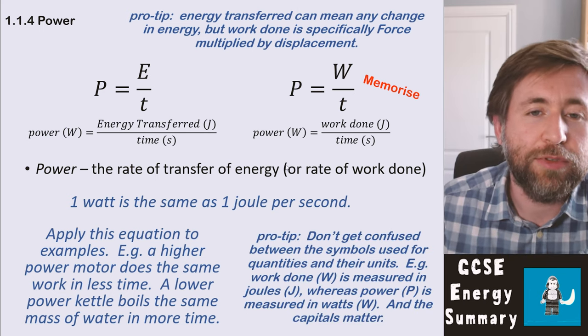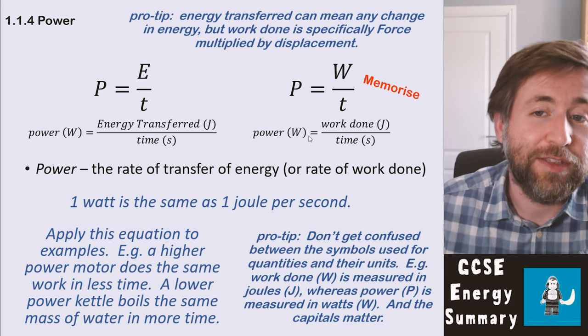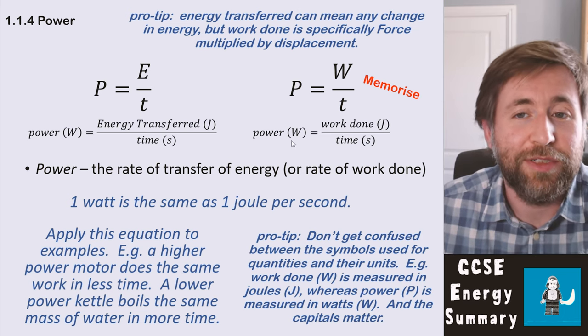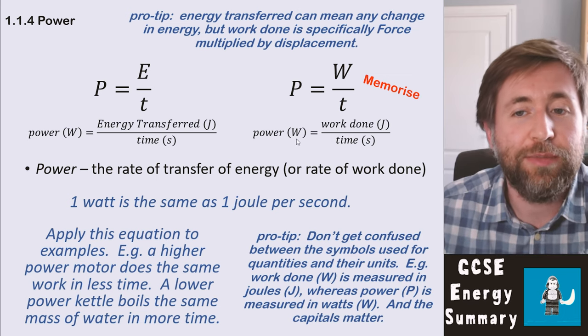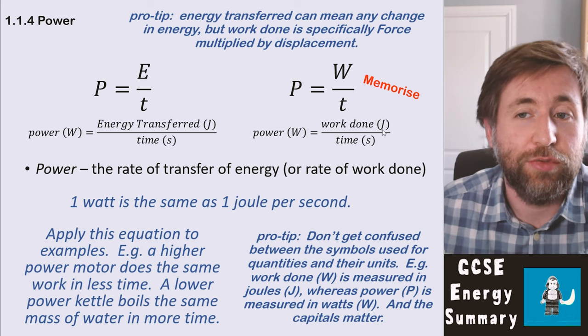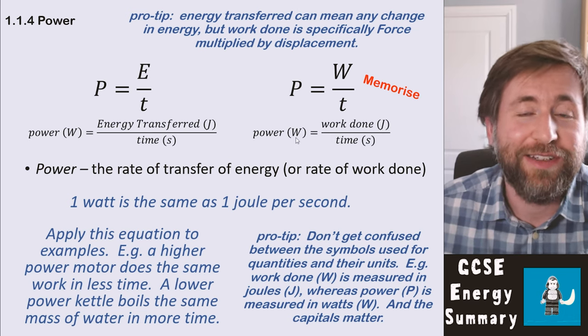Don't get confused between the symbols for the quantities and their units. There's a W here for work done and there's a W here for the watt, which is the unit of power. Please remember that capitals matter: capital W, J for joules—capital J, little s, but capital J, capital W.